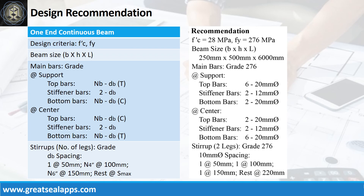At center: top bars — 2 pieces, 20 mm bar; stiffener bars — 2 pieces, 12 mm bar; bottom bars — 6 pieces, 20 mm bar. Stirrups of 2 legs, grade 276, 10 mm bar spacing: one at 50 mm, one at 100 mm, one at 150 mm, rest at 220 mm.